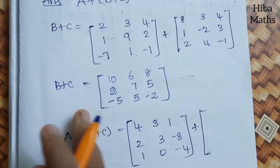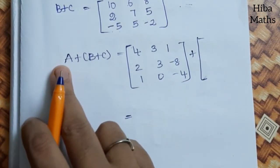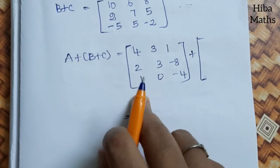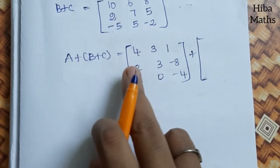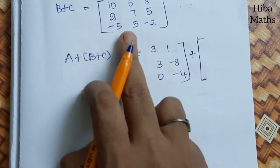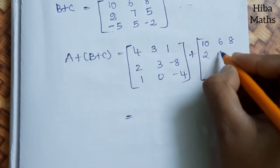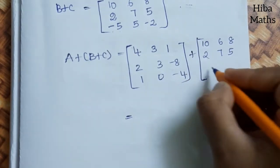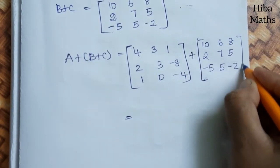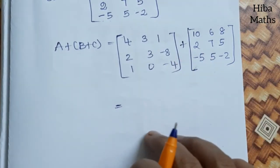This is B + C only. To get our final answer we need to add A to it. So A + (B + C): matrix A is [4,3,1; 2,3,-8; 1,0,-4], and B + C result is [10,6,8; 2,7,5; -5,5,-2]. Now we have found B + C, so next we add A to this.